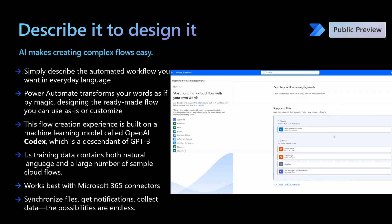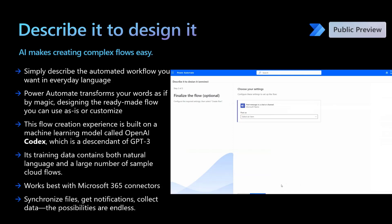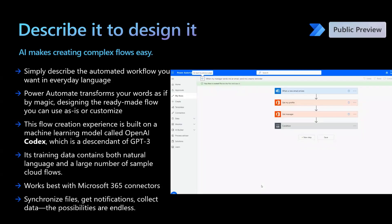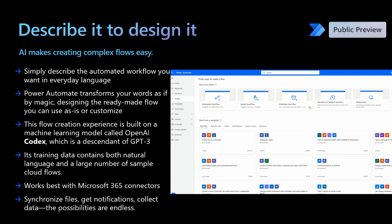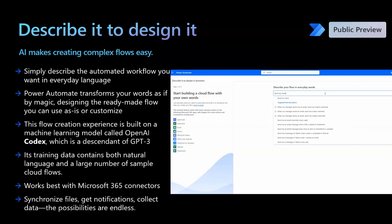For example, you can say: every Friday at 12 pm, send me a list of all the pending tasks from SharePoint, and the Copilot will try to create a Power Automate flow based on this description. You can have templates for your flows in minutes with this Copilot. As of now, this works with Microsoft 365 connectors only.